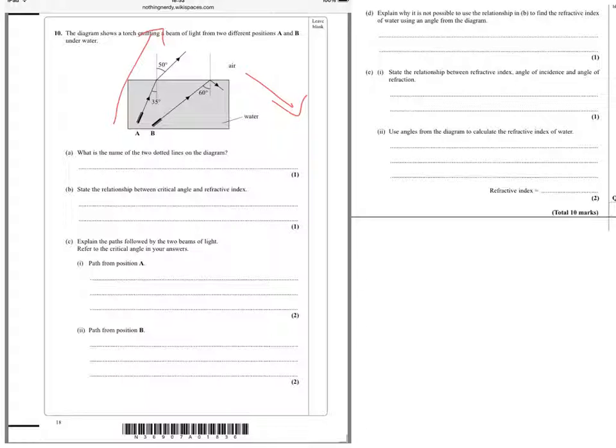Firstly, part A. What is the name of the two dotted lines in the diagram? Well, that's obviously the normal, and that's our imaginary perpendicular line that we always draw with respect to the surface of our material. We always measure our angles between the ray and the normal, not the ray and the surface.